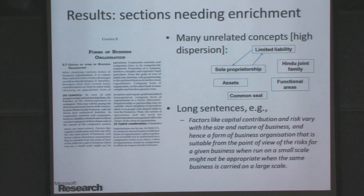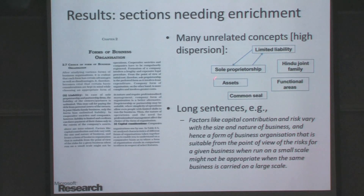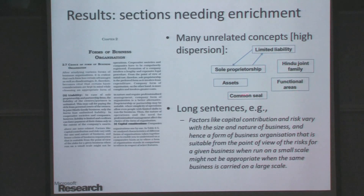Here is an example of a section we conclude needs enrichment. As you can see, there are many unrelated concepts in this section, resulting in high dispersion. Concepts like functional areas, common seal, or Hindu joint family are not very well related.